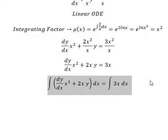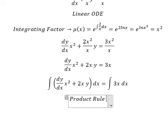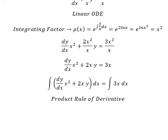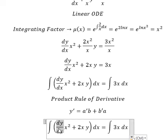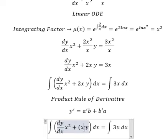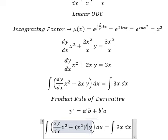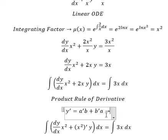Next we can use the product rule of the derivative. We have the first derivative of y equals the first derivative of a multiplied by b plus the first derivative of b multiplied by a.